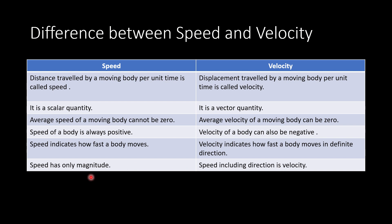Speed has only magnitude, that is why it is a scalar quantity — because it does not have any direction. But speed including direction is velocity, which means that velocity contains both magnitude as well as direction.